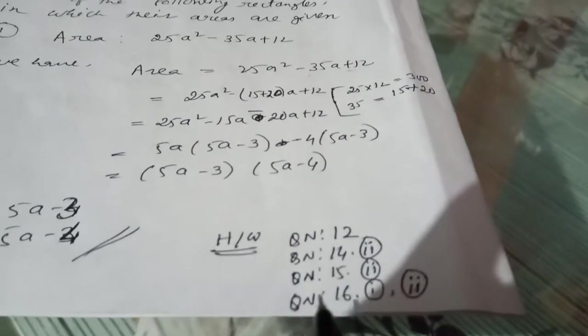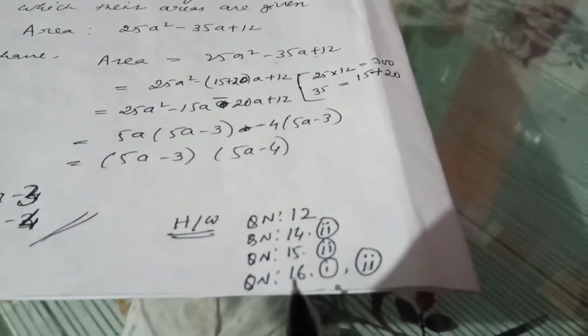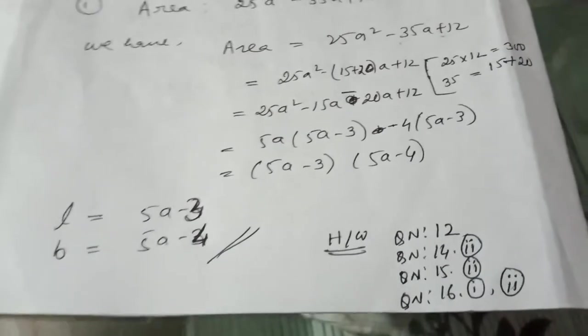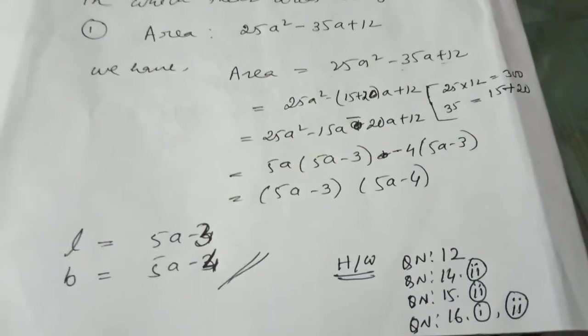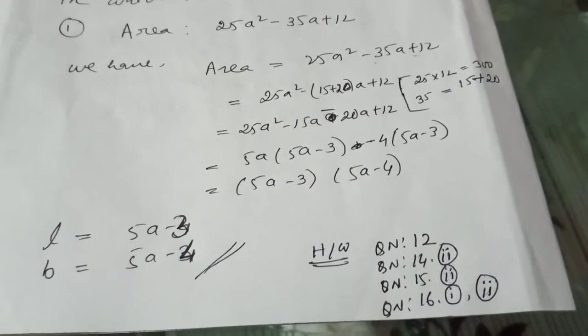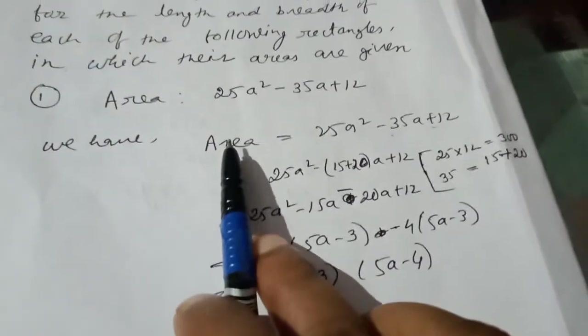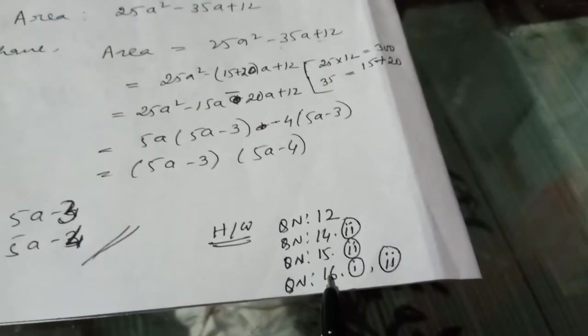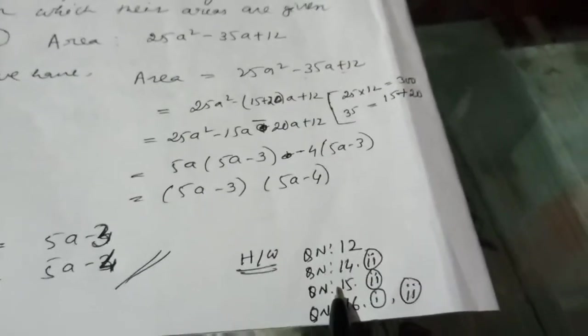For homework, solve question 12, question 14 part 2, question 15 part 2, and question 16 parts 1 and 2. For question 16, you need to find the volume of a cuboid. Volume of a cuboid = length × breadth × height. Factorize the expression and you will get three factors representing length, breadth, and height. Submit in the evening.